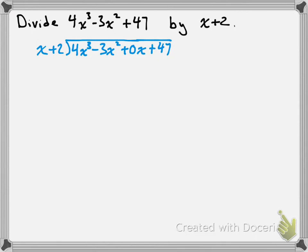We proceed similar to before. We take a look at x and 4x cubed and ask: what times x gives me 4x cubed? The answer is 4x squared, so we write that up top. 4x squared times x is 4x cubed. Then we multiply that 4x squared by the plus 2 in our binomial: 2 times 4x squared gives us plus 8x squared. Now we subtract: 4x cubed minus 3x squared minus (4x cubed plus 8x squared). The 4x cubed terms cancel, and negative 3x squared minus 8x squared gives us negative 11x squared.